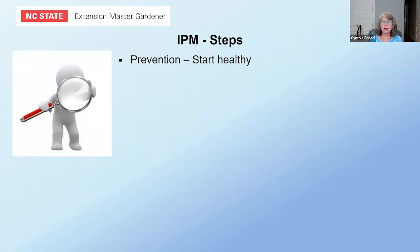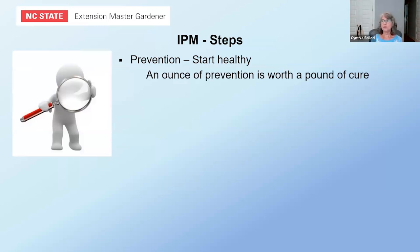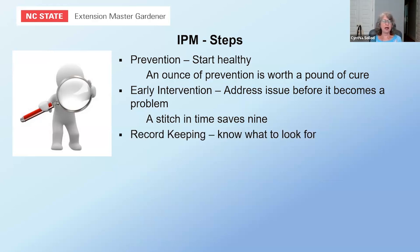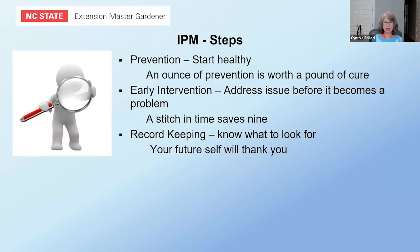To implement these steps in your yard: start healthy — prevention is always great. Make sure anything you introduce is healthy, and employ different cultural methods. An ounce of prevention is worth a pound of cure. Next, address problems early — get rid of those caterpillars before they destroy your plant or require massive chemical spray. A stitch in time saves nine. And keep records — you want to know what to look for. Your future self will thank you when the same problem occurs again; you'll know what worked and when to watch for it.